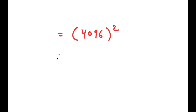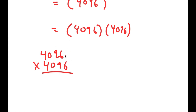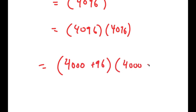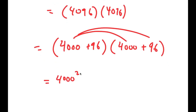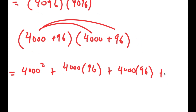4,096 squared is 4,096 times 4,096. Rather than using conventional long multiplication — which takes too long and is easy to make errors with — I'm going to rewrite this as (4,000 + 96) times (4,000 + 96) and use the distributive property. I get 4,000^2 plus 4,000 times 96, plus 4,000 times 96, plus 96^2.